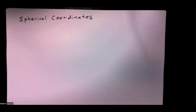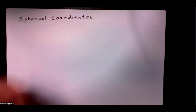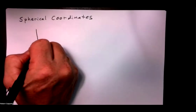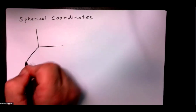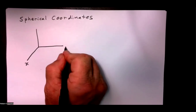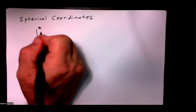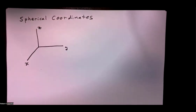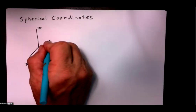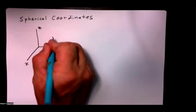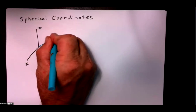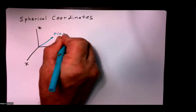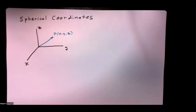In this lesson we're going to examine spherical coordinates. We're used to rectangular coordinates, so let's start with our usual representation. This is in the x direction, this is in the y direction, this is in the z direction. We'll go ahead and place a point P in space, and this point P will be the point x, y, z.